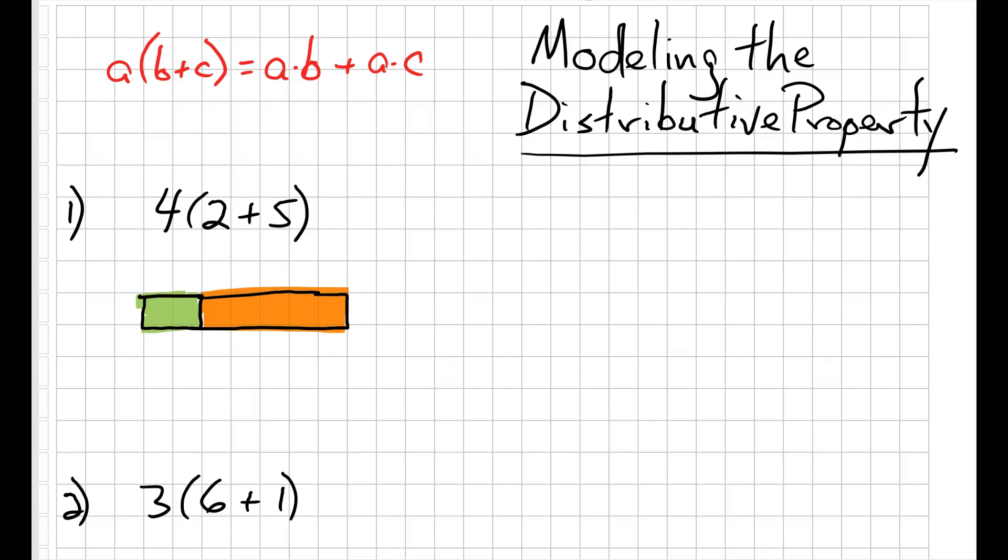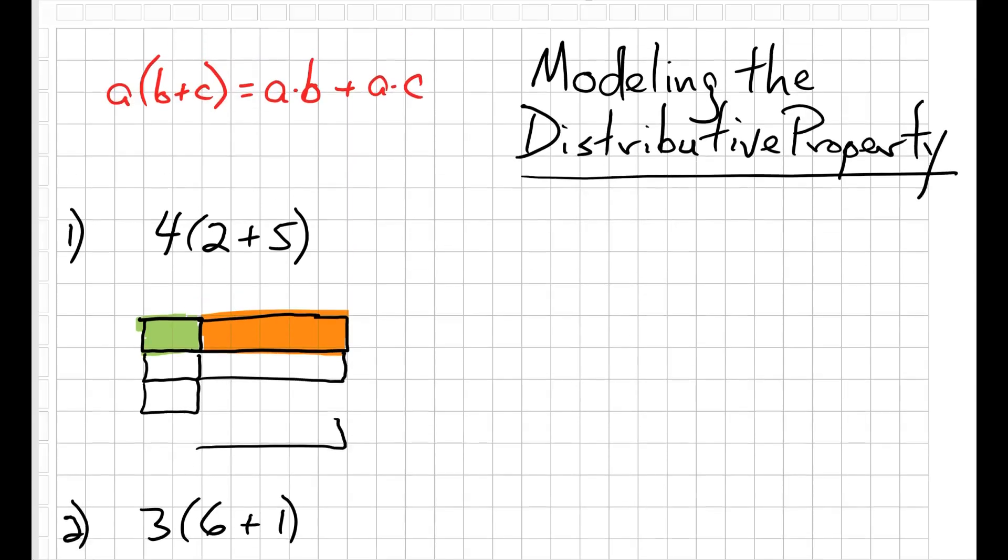but I need to model 4 times 2 plus 5, which means I need 4 of these 2 plus 5s. So let's draw 3 more of them. Okay, so now I've modeled the left side of my distributive property equation. So this is 4 times 2 plus 5.